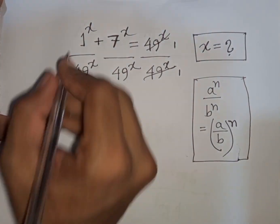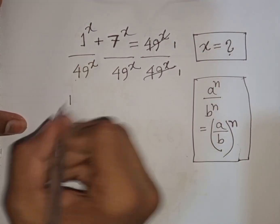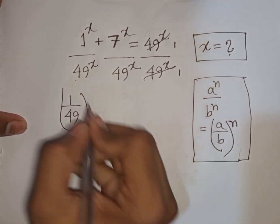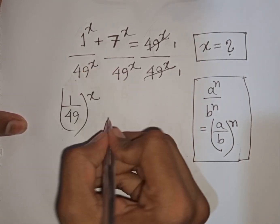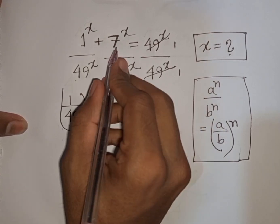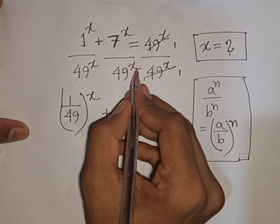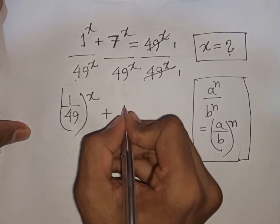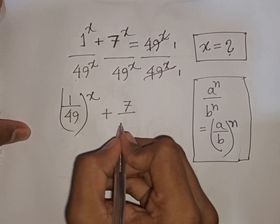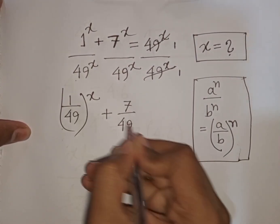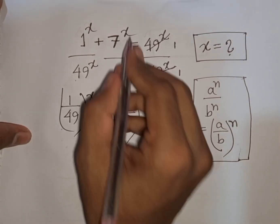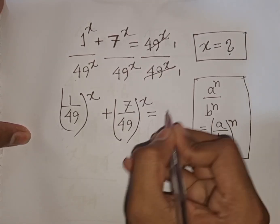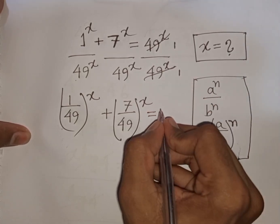According to this rule we can write here (1/49)^x, plus again x, x — same power but different base. So according to this formula we can write (7/49)^x, which is equal to 1 divided by 1, that means it will be 1.